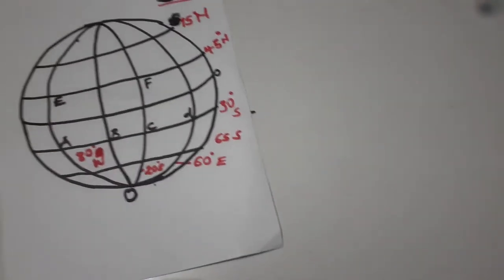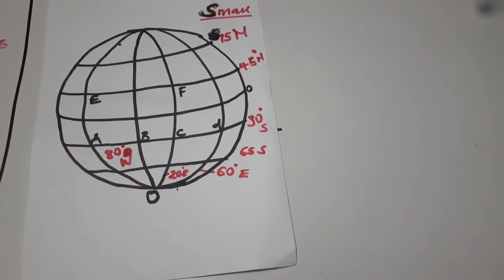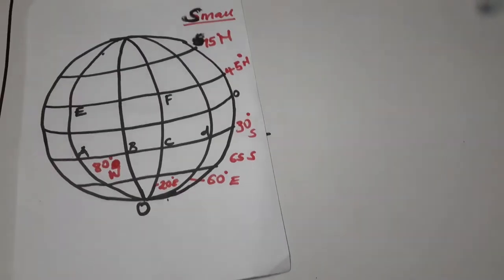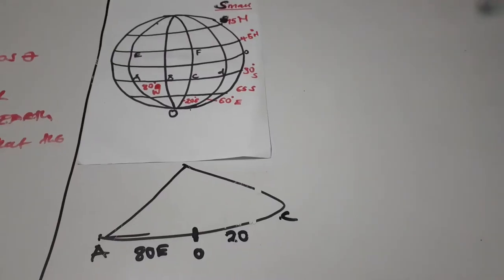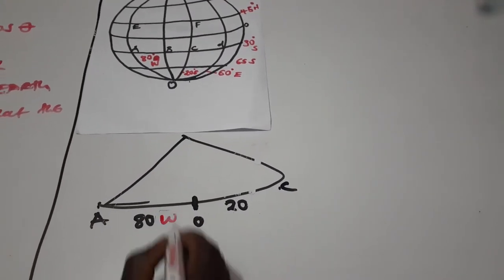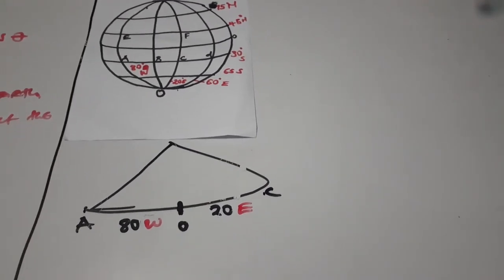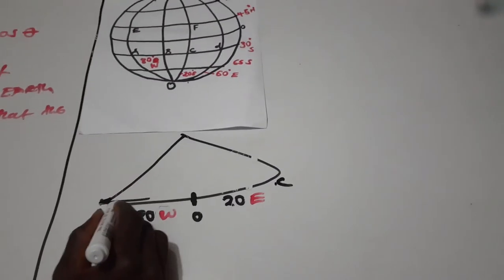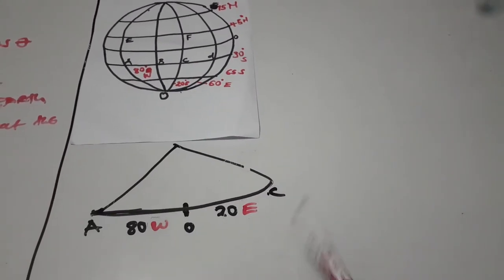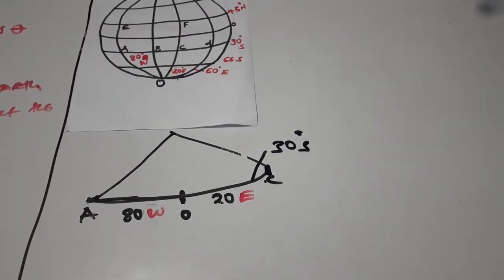We're going to begin with the first point, AC. The coordinates of A — you can see from the diagram — it is 80 degrees west of the Greenwich Meridian, and C is 20 degrees east of the Greenwich Meridian. The latitude for this small circle is 30 degrees south.